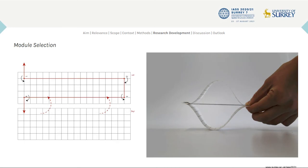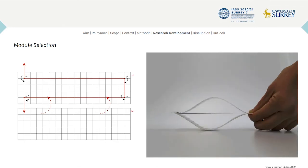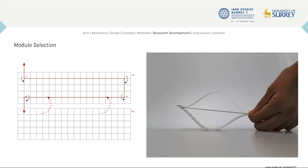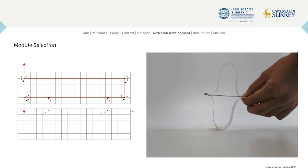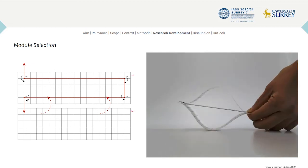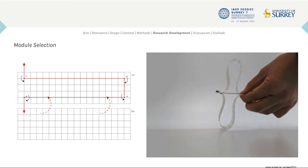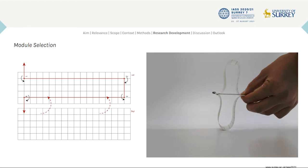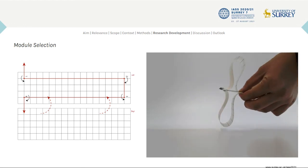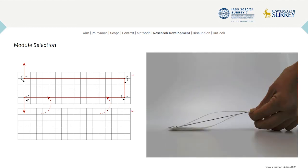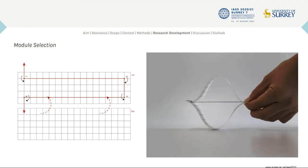This led us to simplify the module to a pair of linear elements and use the tensioning system to vary the module so that an aggregation creates a curved surface. When the outlines of each strip are straight, the aggregated surface has curvature only in one dimension. However, when the outlines are adjusted, they can create a global geometry with double curvature.